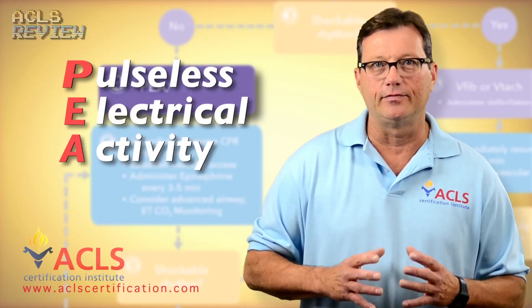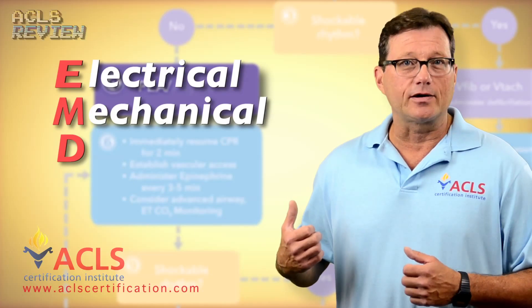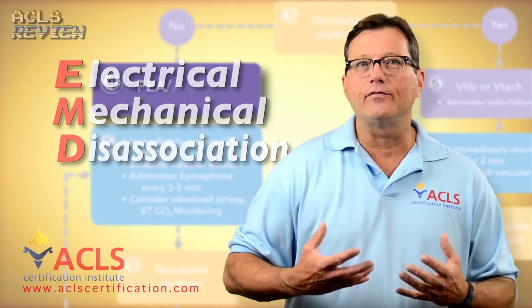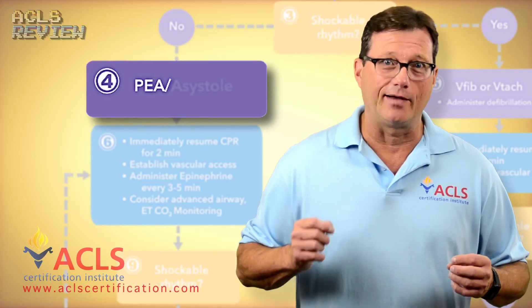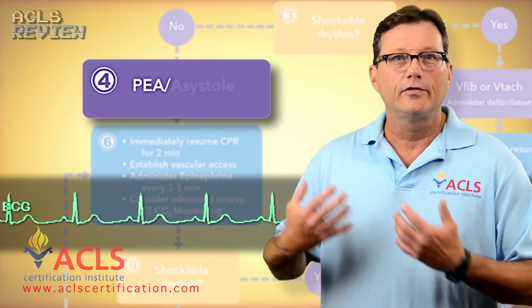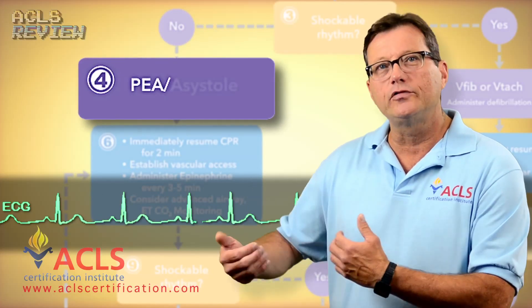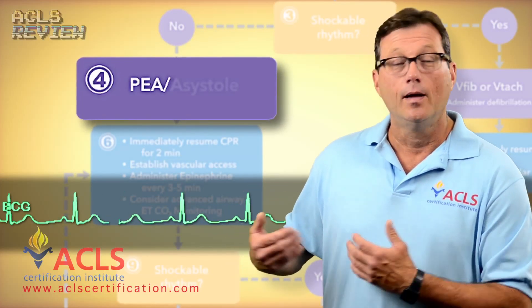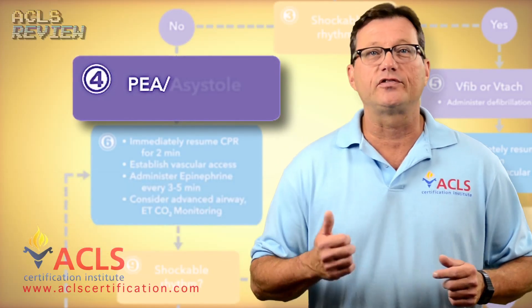Next: PEA — pulseless electrical activity. PEA used to be called EMD, which stood for electromechanical dissociation. What we have in PEA is any organized rhythm that's not generating a palpable pulse. It's a rhythm that should have a pulse. For example, it may look like a normal sinus rhythm, except the patient has no appreciable pulse with this rhythm. But they should — but they don't. That's what makes it PEA. PEA is not a rhythm; it's a state, it's a condition.